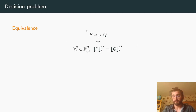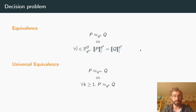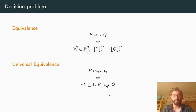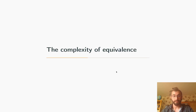Equivalence for F_Q^K simply asks that for all possible inputs, the two programs produce exactly the same distribution. Universal equivalence asks that for all possible K, P is equivalent to Q when looking at F_Q^K.